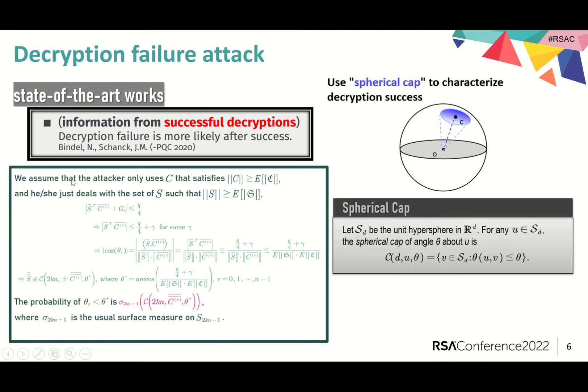We assume that the attacker only uses c that satisfies the norm of c is larger than the expectation, and he or she just deals with the states of s such that the norm of s is larger than the expectation. We rearrange the process of obtaining information about s from the successful decryptions. A minor error has been fixed. As can be seen, the success of query c means that s double bar does not belong to two n-caps of angle theta star above the rotations of c.